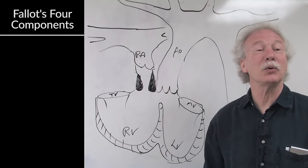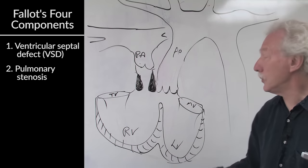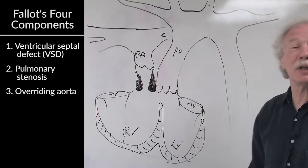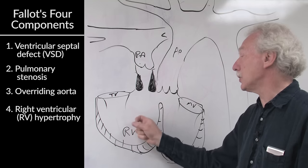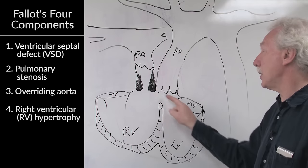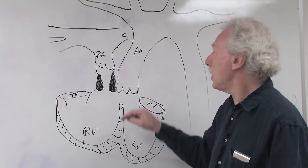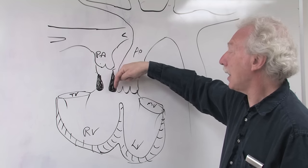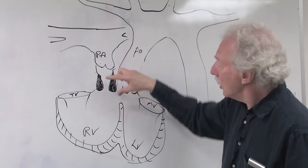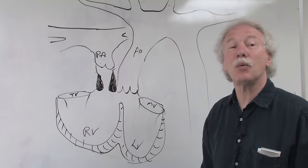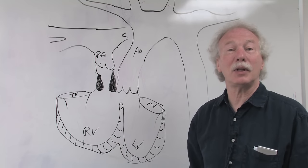Tetralogy of Fallot has Fallot's four components: ventricular septal defect, pulmonary stenosis, in this drawing sub-pulmonary stenosis, overriding aorta so it's a bit over the ventricular septum, and increased right ventricular muscle mass or right ventricular hypertrophy. Really this is all because there is malalignment of the conal septum with the ventricular septum which creates the VSD, crowds the right ventricular outflow tract, leading to the overriding of the aorta.